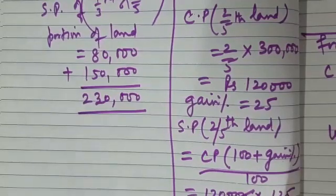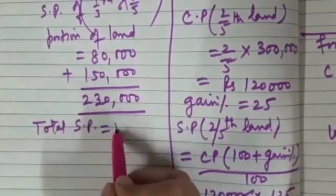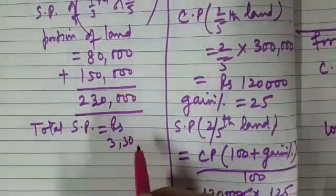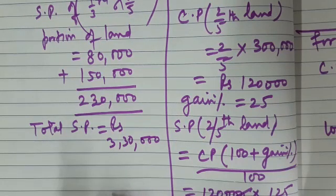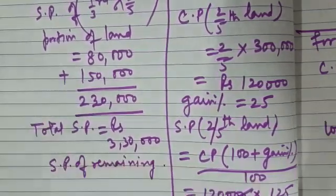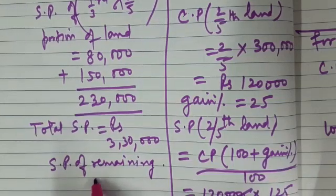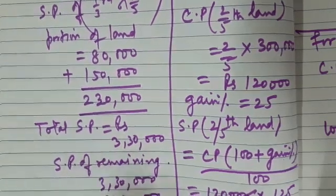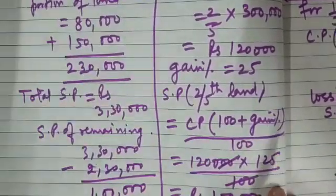Now the total selling price of the land, total SP of the land is rupees 3,30,000. We have calculated this earlier. So, what is the SP of remaining land? In which we will be having overall profit as 10%. So, 3,30,000 minus 2,30,000. What do you get? We get 1 lakh.